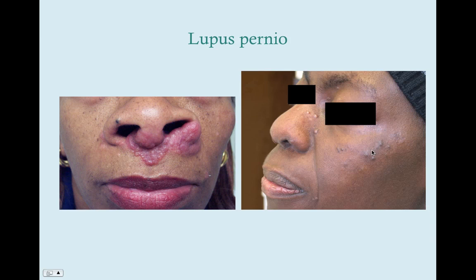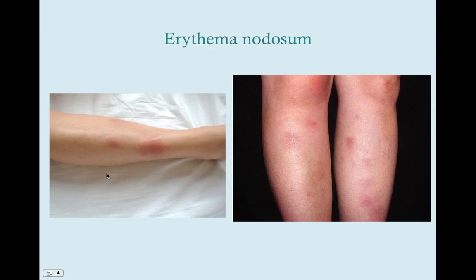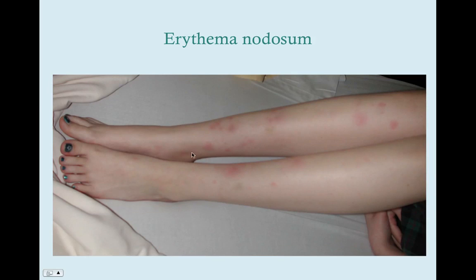Here are some more severe cases of lupus pernio — usually starts around the nose and then goes outward. Erythema nodosum is another skin finding, but this is not specific to sarcoidosis. You can see this in Crohn's disease, other autoimmune diseases, and Lofgren's syndrome, which we'll talk about shortly. These are sort of welts that tend to appear on the shins.